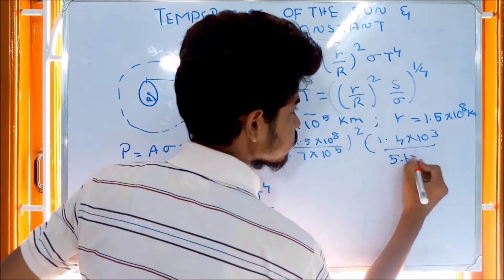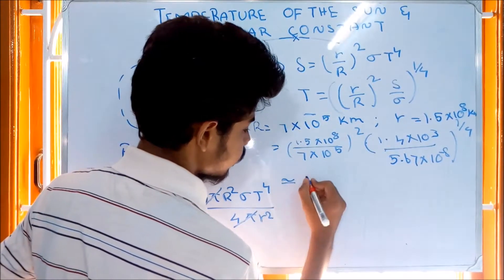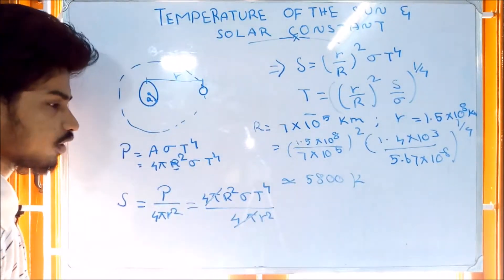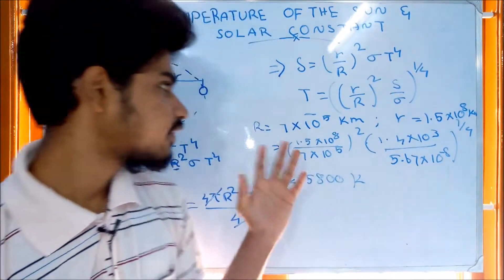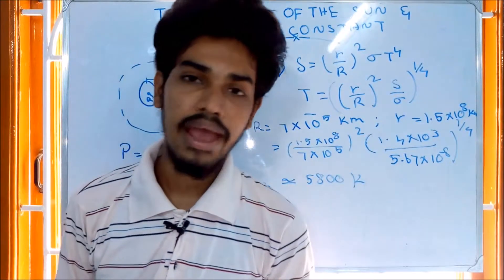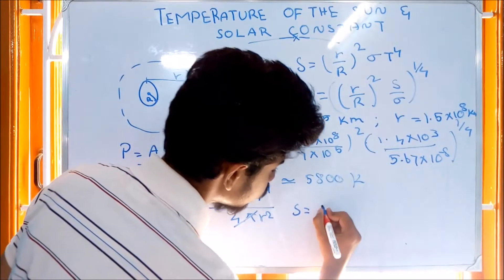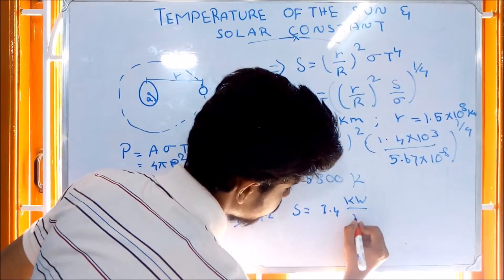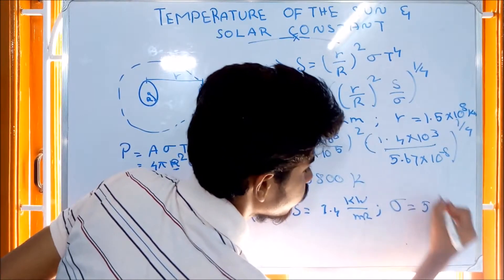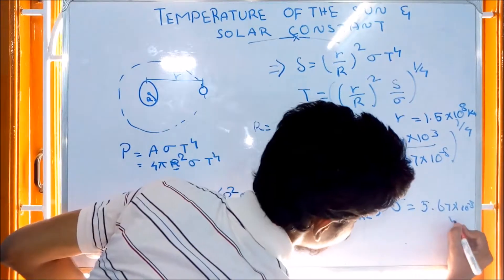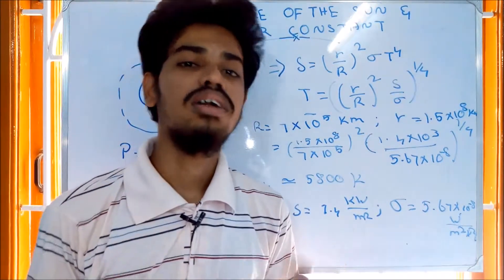Multiplied by 5.67 into 10 to the power of minus 8, to the power of 1 by 4. The result is approximately 5800 Kelvin. So roughly 6000 Kelvin. This is the temperature of the sun. The solar constant S is equal to 1.4, and the Stefan-Boltzmann constant is 5.67 into 10 to the power of minus 8 watts per meter squared per Kelvin to the power 4. This is from the transmission of heat chapter.